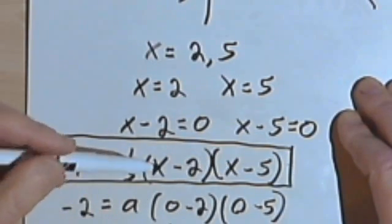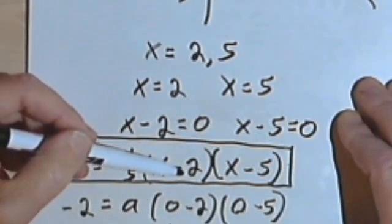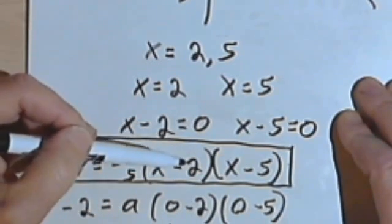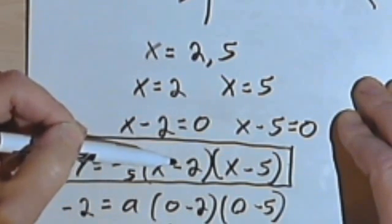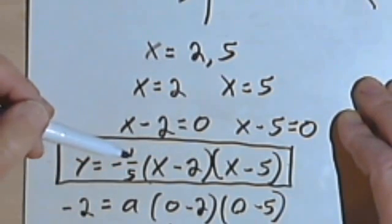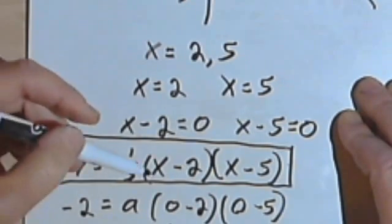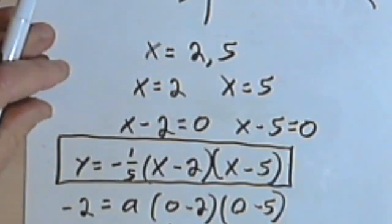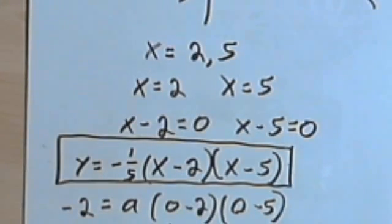And then if I want to, I could of course multiply x minus 2 times x minus 5 and get something with an x squared. And if I wanted to go even further, I could multiply everything by negative 5. That's just a question of finding out what form you're supposed to put the final answer into. So that's about it. Take care, I'll see you next time.